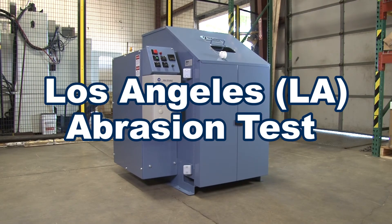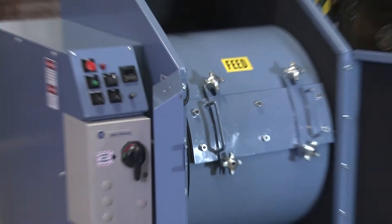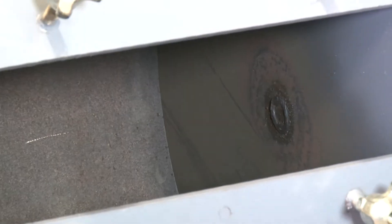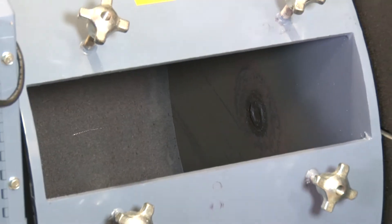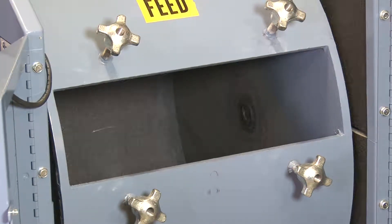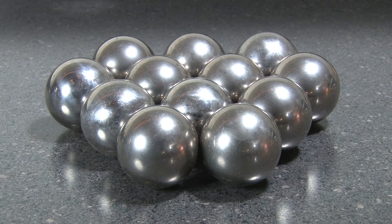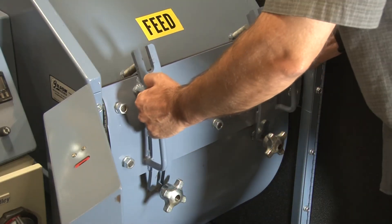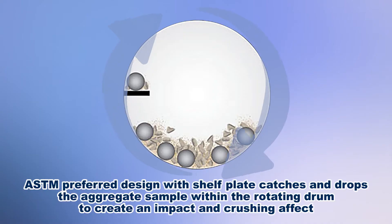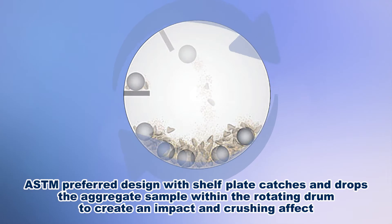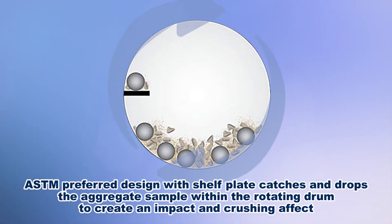The Los Angeles Abrasion Test is a widely used procedure that evaluates the degradation of aggregates by both abrasion and impact forces. Dry, coarse aggregate samples are rotated in a large steel drum with a hardened steel shelf and abrasive charge, creating an impact-crushing effect. The LA Abrasion Test is an indicator of aggregate quality and measures degradation of standard gradations of aggregate.